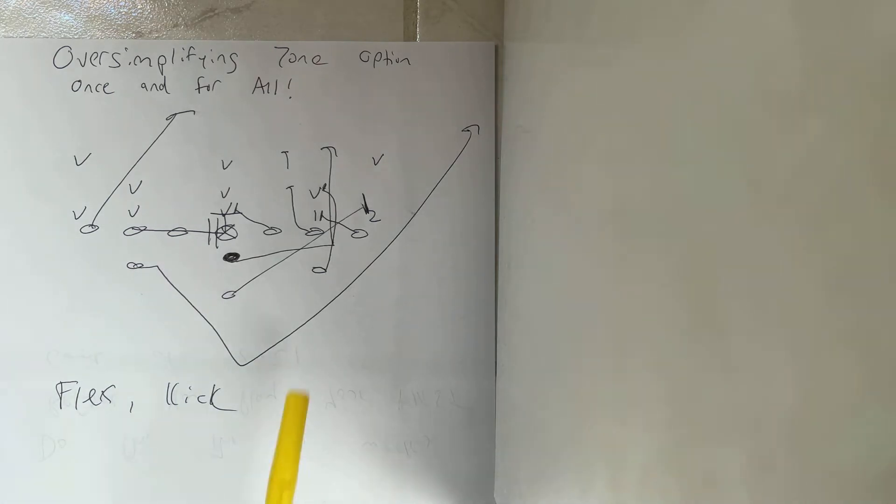Then eventually Navy figured out if you bring the receiver in and double flex and you crush the C gap player, you build the wall in the C gap. And now everybody can block it much easier. And really it becomes more of a gap scheme. But it can even be taken a step further. And there's things that Army has done to take it a step further.